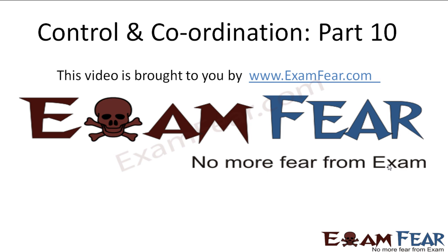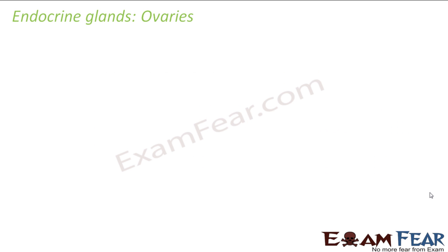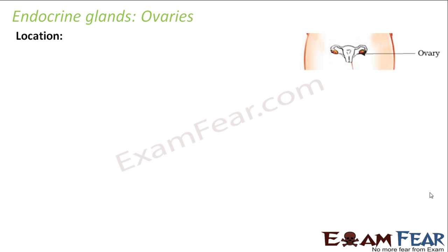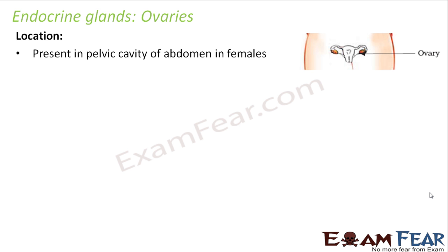This video on control and coordination part 10 is brought to you by examfear.com. Let us now talk about the reproductive organs of the body — that is the ovaries, which are the female reproductive organs. These ovaries are located in the pelvic cavity of the abdomen in females.